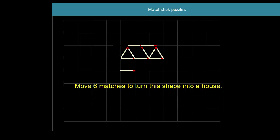Let's see what the solution is. First match. Second match. Next one. There's our next match moving. Second last. And our last match falls into place. And there's our nice little house by moving six matches. Let's try the next one.